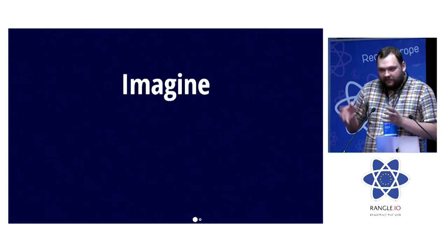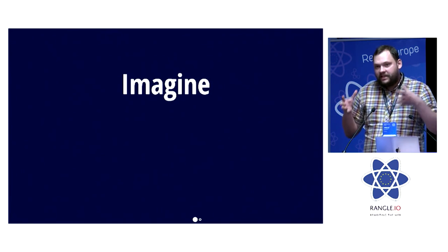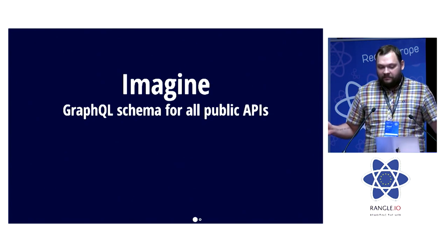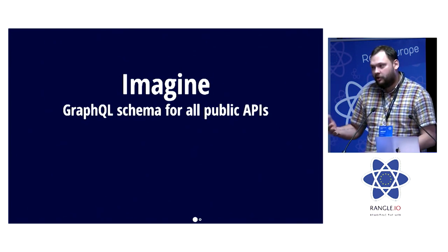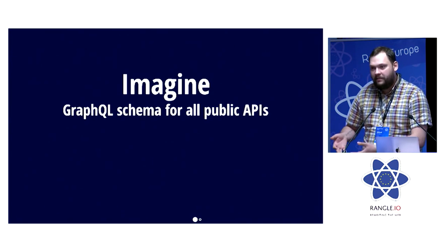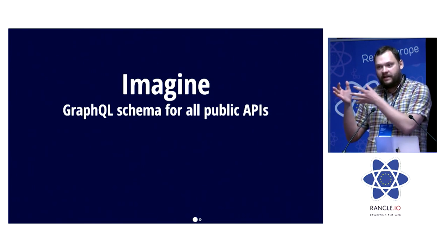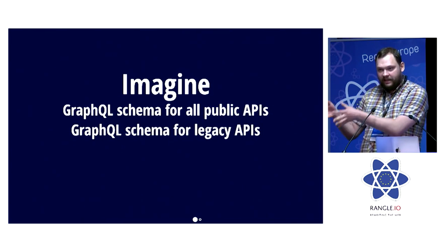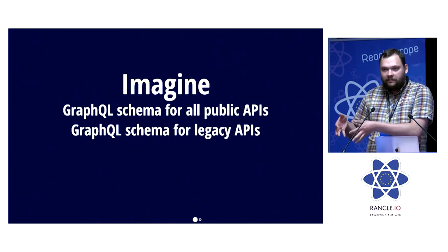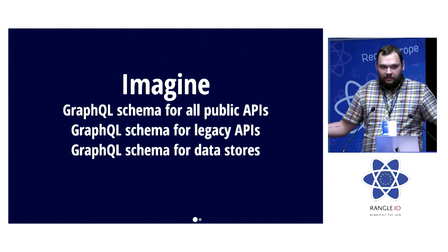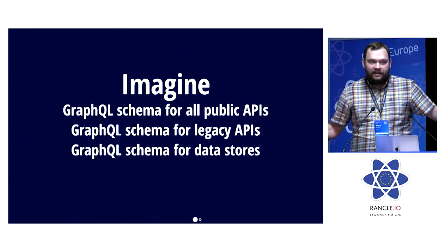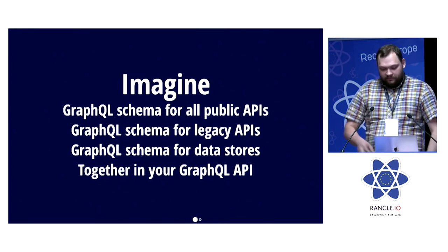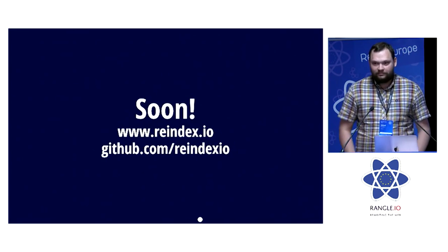If we have those higher-level types, re-index is the first step for our community. Imagine if we can start having GraphQL schemas that are shareable for public APIs — so you can include the Twitter API in your application just by importing it, just by installing an NPM package. Or if you have a legacy API, you can build a schema around it and include it in your application, add a database, connect it all together into one GraphQL API. So yeah, thank you.